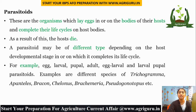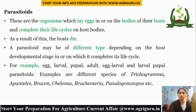In the case of egg-larval parasitoids, the parasitoid stays on the egg and also in the larva. In the case of larval-pupal parasitoids, it stays in the larval as well as the pupal stage of the host. Examples of parasitoids include Trichogramma, Apanteles, Bracon, Chelonus, Brachymeria, and Pseudogonatopus.